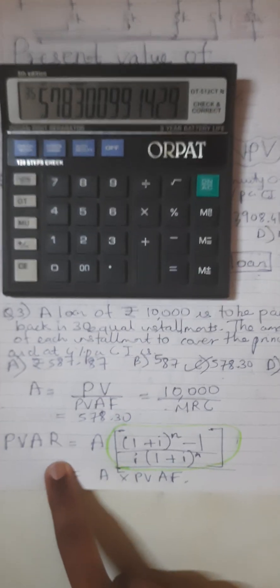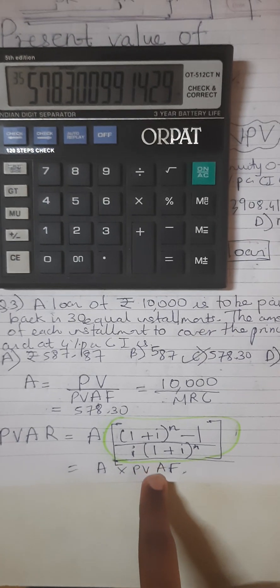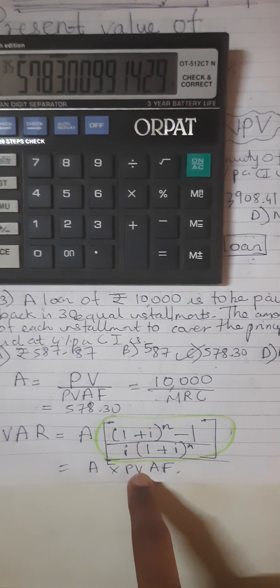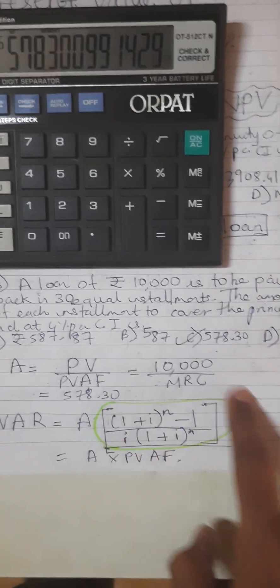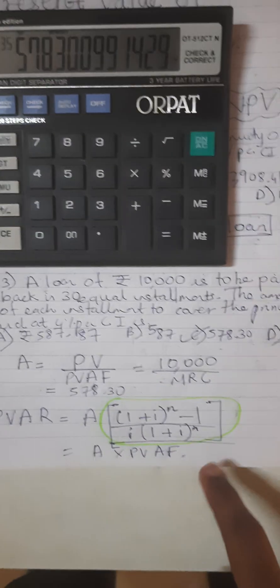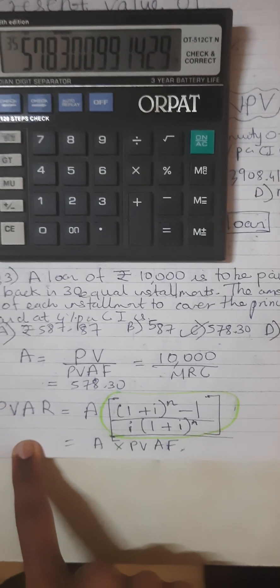Also, this is the actual formula for computing PVAR, present value of annuity regular. What we do is we multiply directly by the present value annuity factor. This is the formula of present value annuity factor. Just in case this comes in the exam, this is an easy one marker, hence I've shown the formula over here.